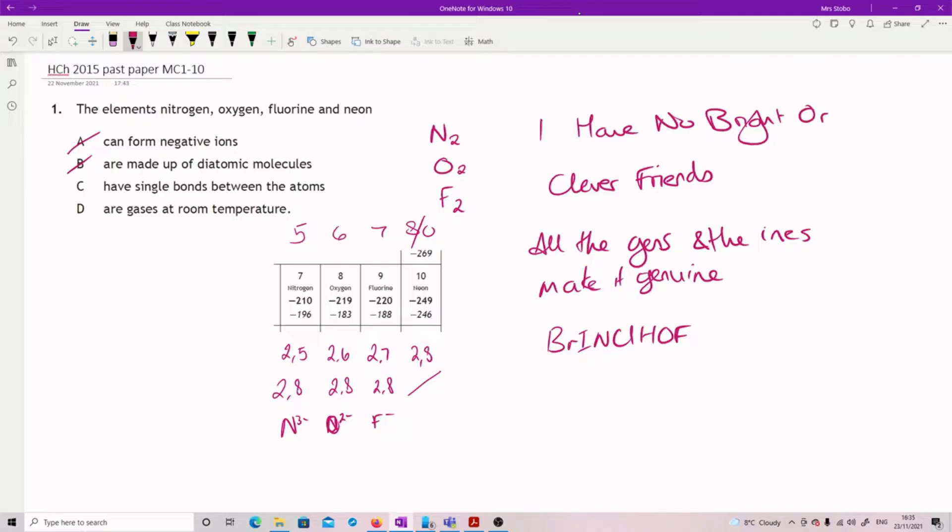Neon is not in there. Have single bonds between the atoms? Well, nitrogen is actually a triple, oxygen is a double, fluorine is a single, and neon is still refusing to do anything, so no. Are gases at room temperature? Let's have a look at these melting and boiling points. Categorically yes.